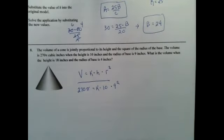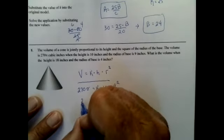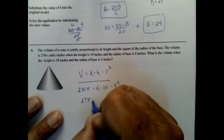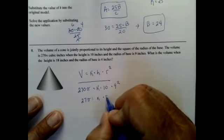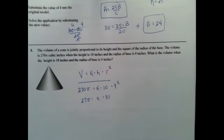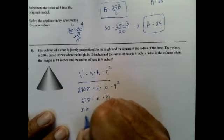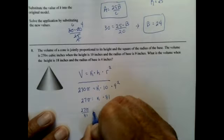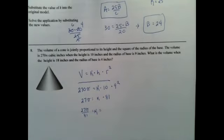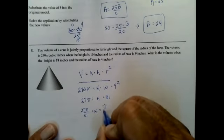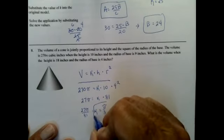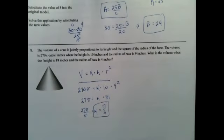The volume of cone is jointly proportional to its height and the square of the radius. The volume is 270π cubic inches when the height is 10 and the radius is 9. So now I'm going to find that constant of proportionality. I'm going to divide by 10, that's going to give me 27π equals k times 81. Divide by 81. Looks like my k is going to be π over 3. How'd I do?